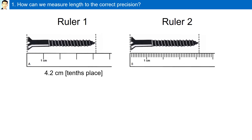This ruler can record measurements to the tenth place. In ruler 2, example B, the screw is between 4.1 and 4.2 centimeters. We know for a fact it is 4.1 centimeters and we can estimate one beyond that. For example, we can say it is 4.15 centimeters. This ruler can report answers to the hundredth place.